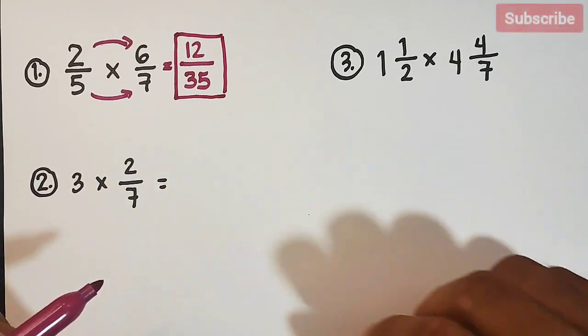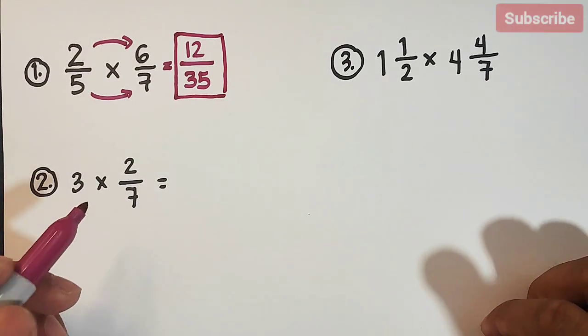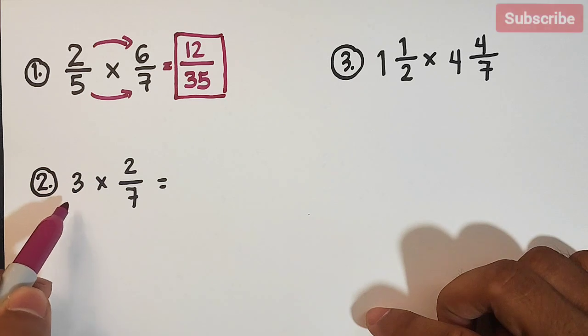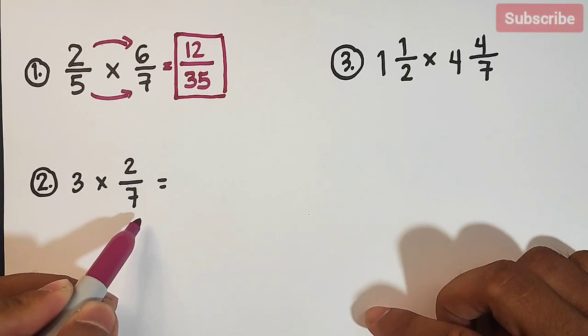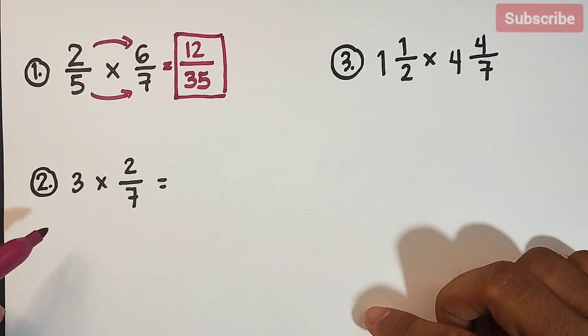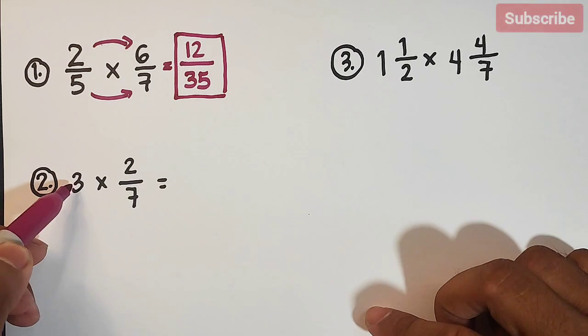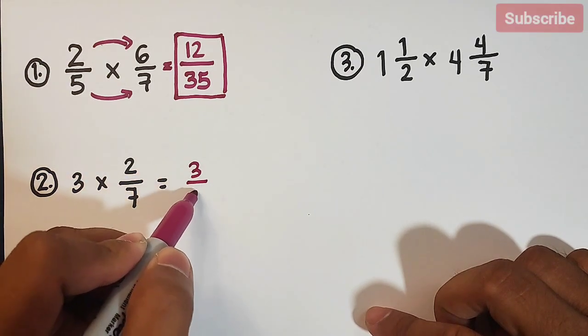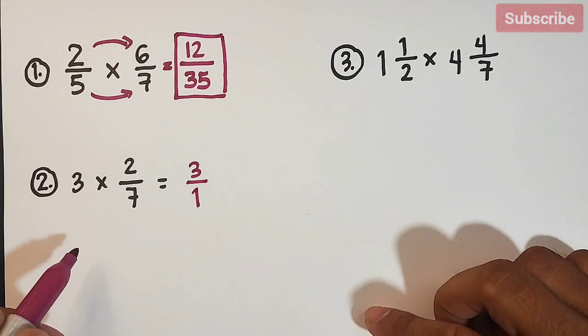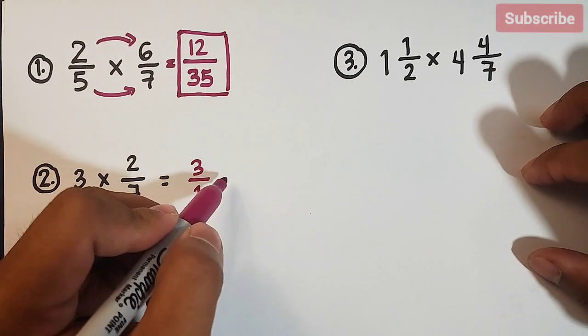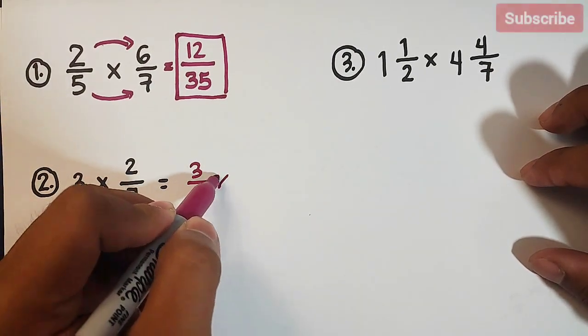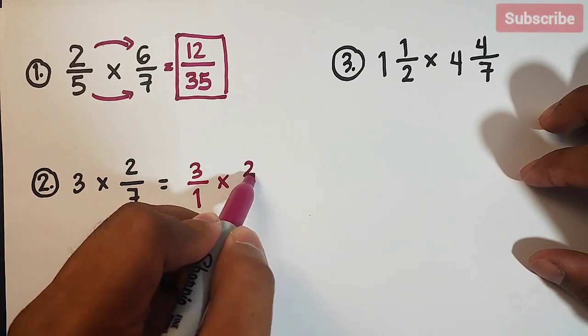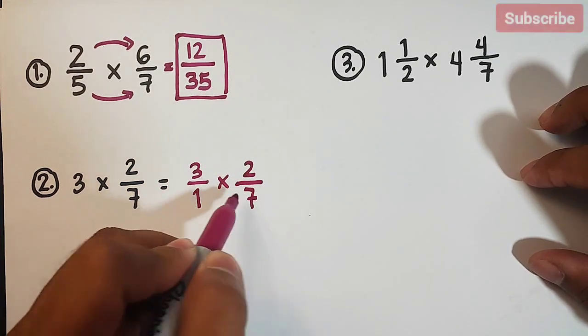So let's move on with item number 2. For number 2, we are given a whole number 3 and 2 over 7. So how are we going to do this? First, you will express your whole number as a fraction. This 3 can be expressed as 3 over 1. Remember that, guys. Next, copy your next fraction times 2 over 7.